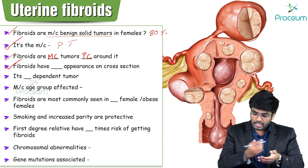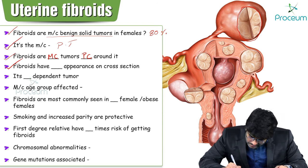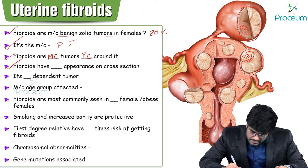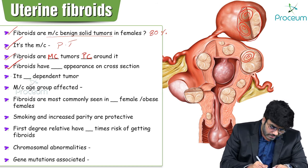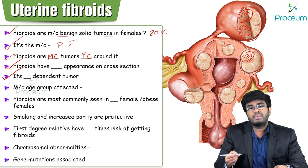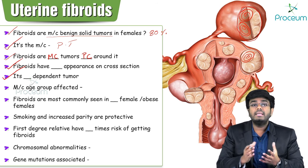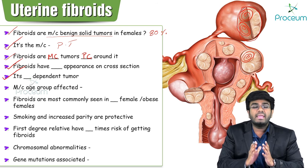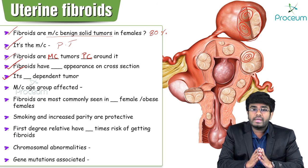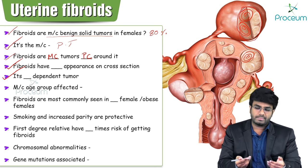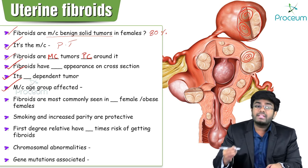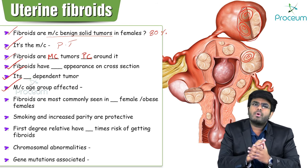On cross section, fibroids show a whorl appearance — you can clearly see this whorl appearance on cross section. Fibroids are estrogen and progesterone dependent tumors; they depend on estrogen and progesterone for their growth.